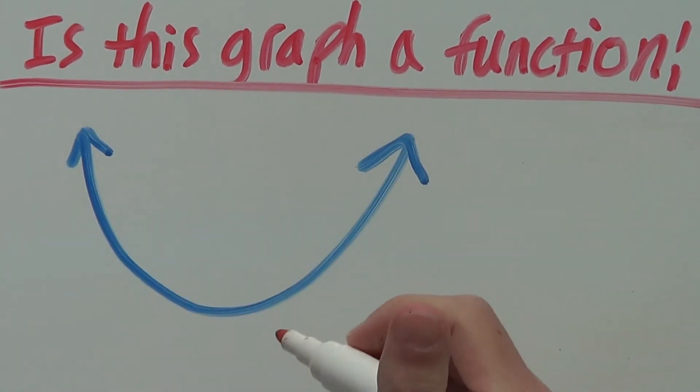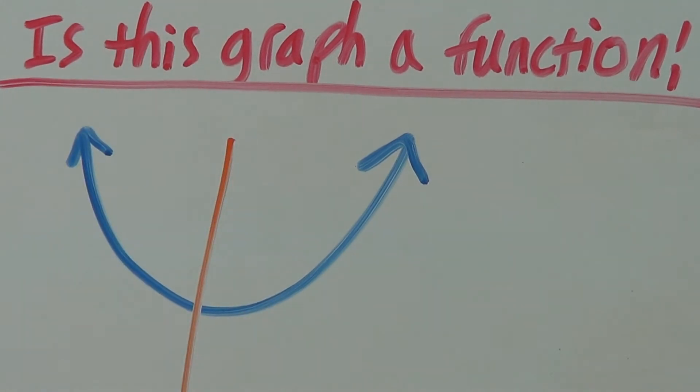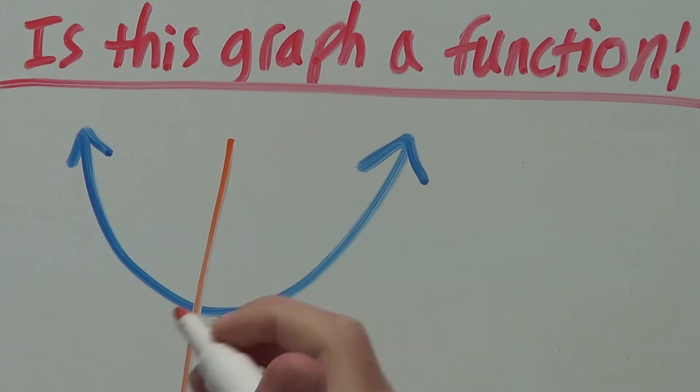So on this graph here, if we use the Vertical Line Test, that's not a perfectly straight line but anyway, we can see that there is only one intersection meaning that this graph is a function.